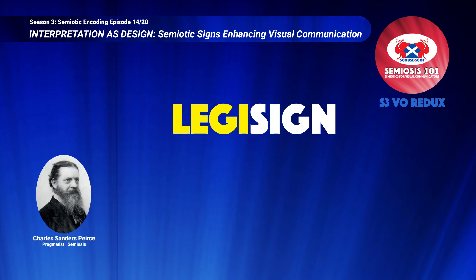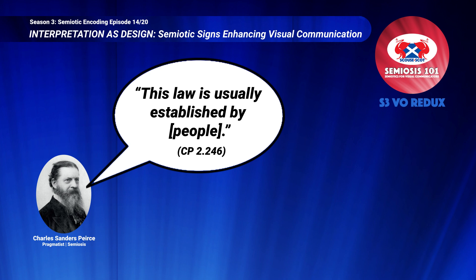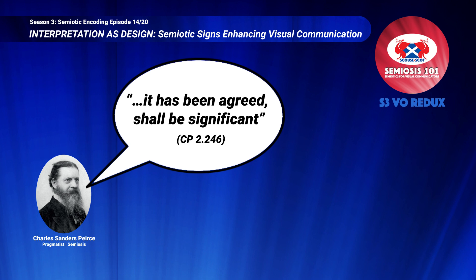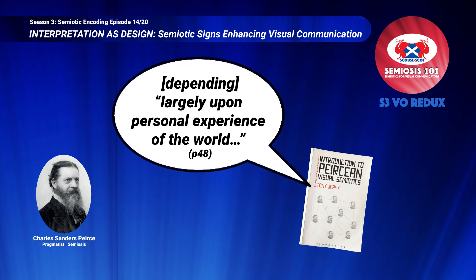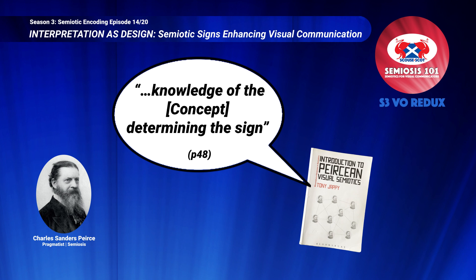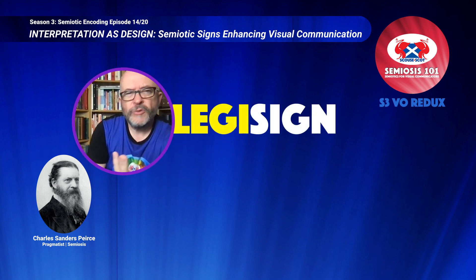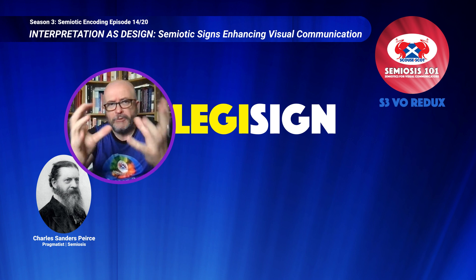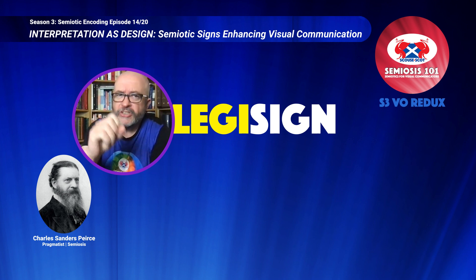So if a quality sign is a sign vehicle which is an ephemeral semiotic meaning-bearing quality, and a sin sign is a single-use sign vehicle used to visually communicate a thing, then what is a legisign? Peirce is quite careful in how he defines a legisign. A legisign is a law that is a sign. This law is usually established by people. Every conventional sign is a legisign. It is not a single object but a general type which it has been agreed shall be significant. Peircean scholar Professor Tony Jappe describes a legisign as depending largely upon personal experience of the world and collateral — that is independent knowledge of the concept determining the sign.